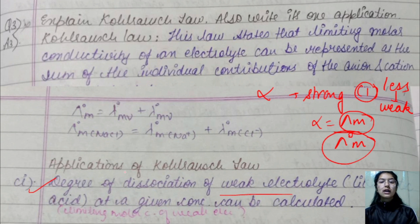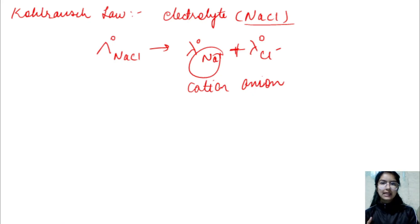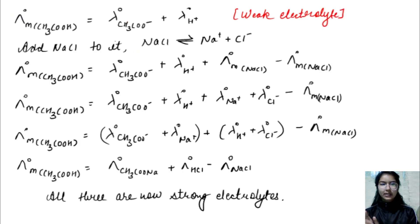How can we calculate them by the help of Kohlrausch's Law? Second is, we can determine limiting molar conductivity. We can easily find this for weak electrolytes. What do we use? We use Kohlrausch's Law. So you can take a screenshot of this, I will explain it.